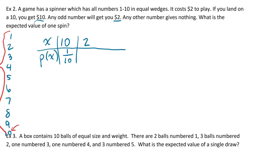Next up, we could win $2. What is the chance that we win $2? Any odd number will get us $2, so that's 1, 3, 5, 7, and 9 — five odd numbers, so 5 chances to win out of 10. And again, it costs $2 to play, so we're always going to be losing $2, which means we put negative 2 with a probability of 1.